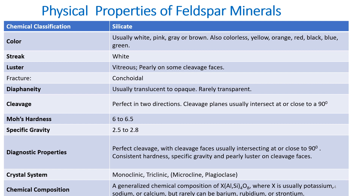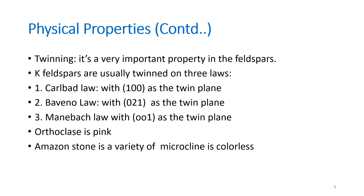They crystallize in monoclinic and triclinic crystal systems. The generalized chemical composition is represented as XAlSi₃O₈, where X is usually potassium, sodium, or calcium. Rarely, X can be barium, rubidium, strontium, or other elements.